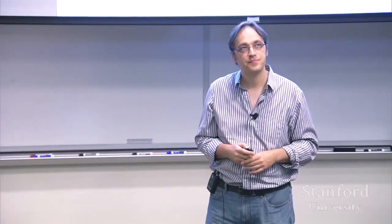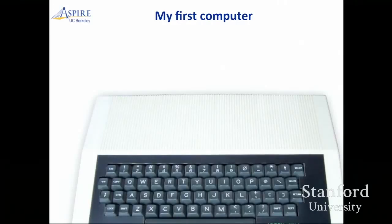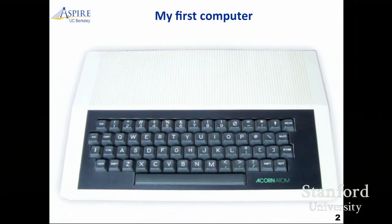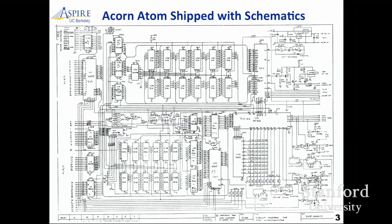I'll start with a little aside — my first computer. This is a picture of my first computer. I'll ask people to guess what this is; I don't expect anybody to know. This was actually an Acorn Atom — it came out before the BBC Micro, a 6502-based machine. There are two reasons I'm telling you about this. One is that it was open source: you bought the computer and got the schematics. You knew exactly what was in there, making it very easy to program it, attach stuff, and play with it.